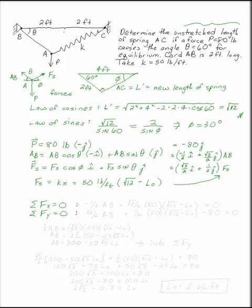If we add all of the i's, we have minus one-half times AB plus the square root of 3 over 2 times 50 times the square root of 12 minus L0. P does not have an i term, so this equals zero.